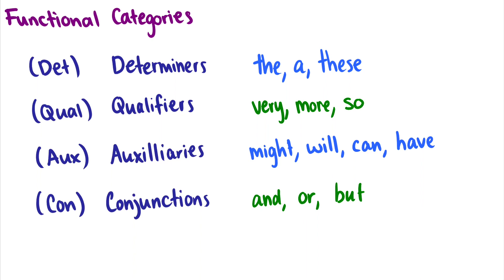Then we have functional categories, which pattern with one of the lexical categories. Determiners like 'the' or 'these' pattern with nouns — you'll always see them with nouns. Qualifiers are words that can modify adverbs, such as 'very quickly,' or even prepositions, such as 'more into it' or 'he's so into it.' Auxiliaries are modals or words like 'have' or 'been,' as in 'I could have been happy.' Conjunctions join two sentences together, like 'I went to the store and I went to the park.'